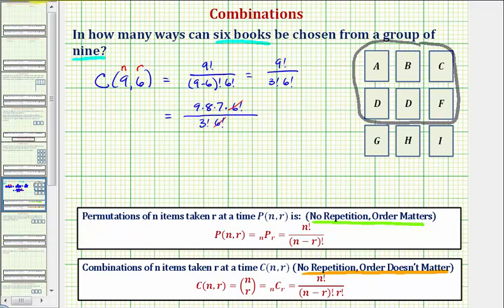And now we'll expand three factorial. We have nine times eight times seven divided by three times two times one. Notice three and nine share a common factor of three, and two and eight share a common factor of two.